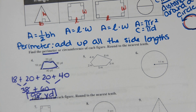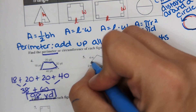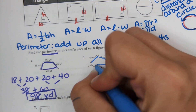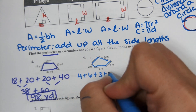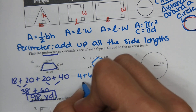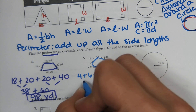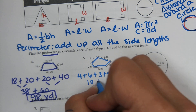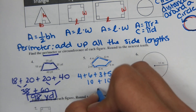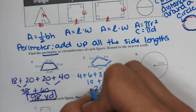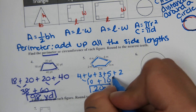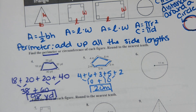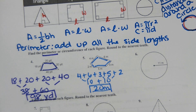For number 5, same idea — to find the perimeter of the shape, we add up all the sides: 4 plus 6 plus 3 plus 5 plus 2. That's 10 plus 10, which is 20 meters. It's not squared or anything because perimeter is just the length around.